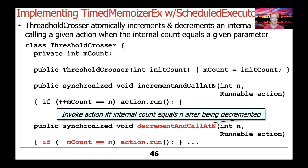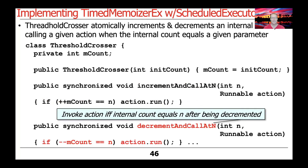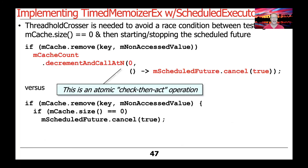We use incrementAndCallAtN to detect when we go from an empty map to one with at least one element. We use decrementAndCallAtN to detect when the count goes from one to zero — meaning the map has become empty — and then atomically cancel the future or schedule the timer as needed.